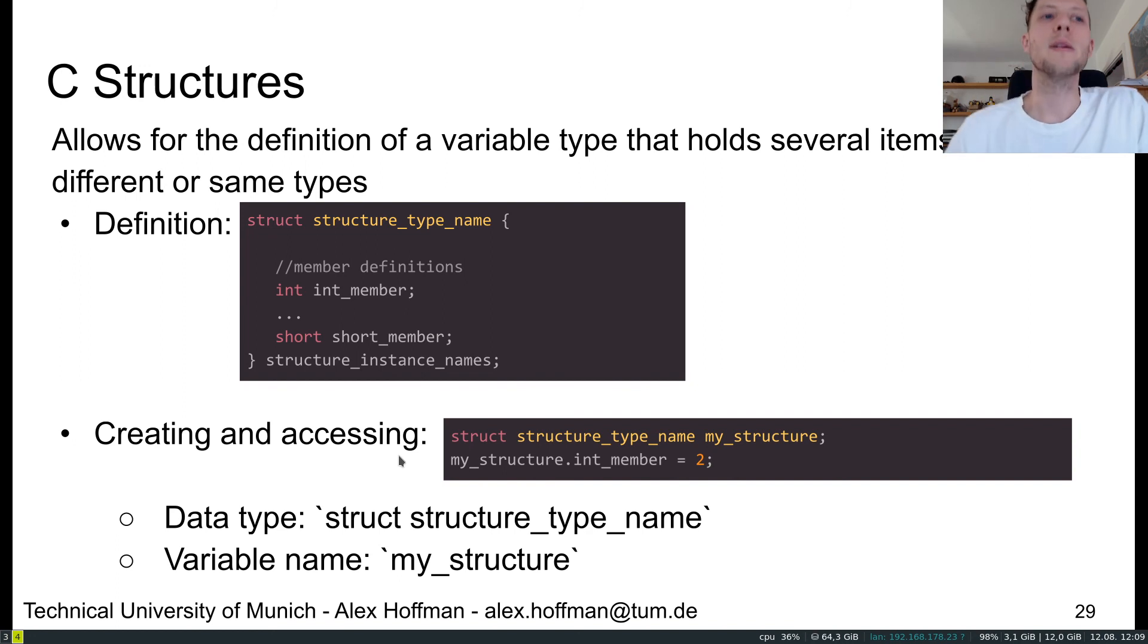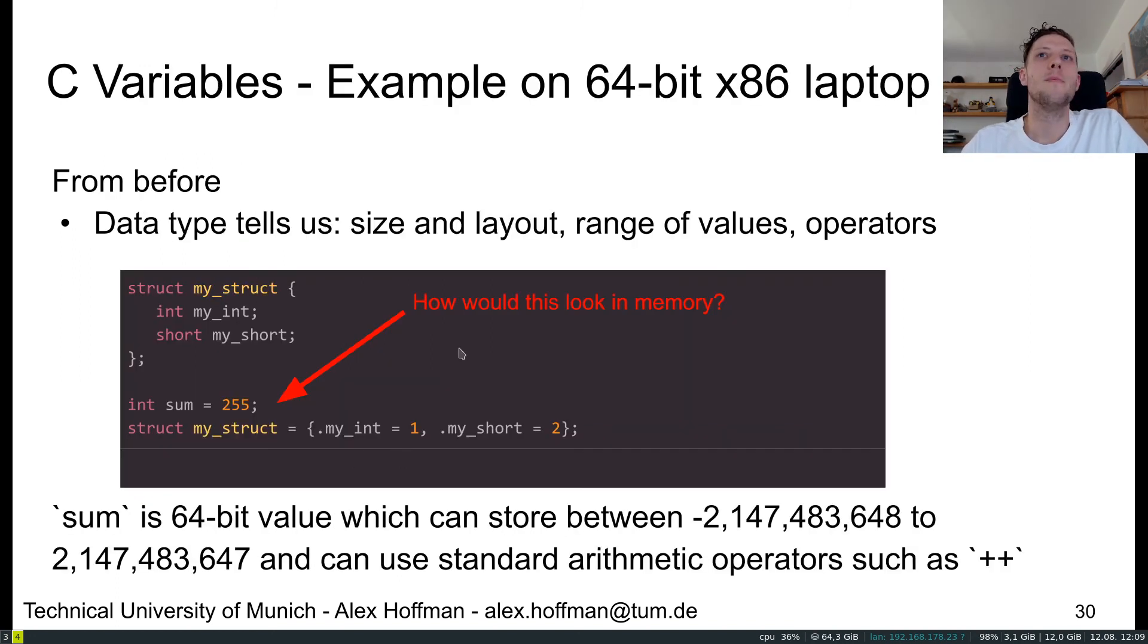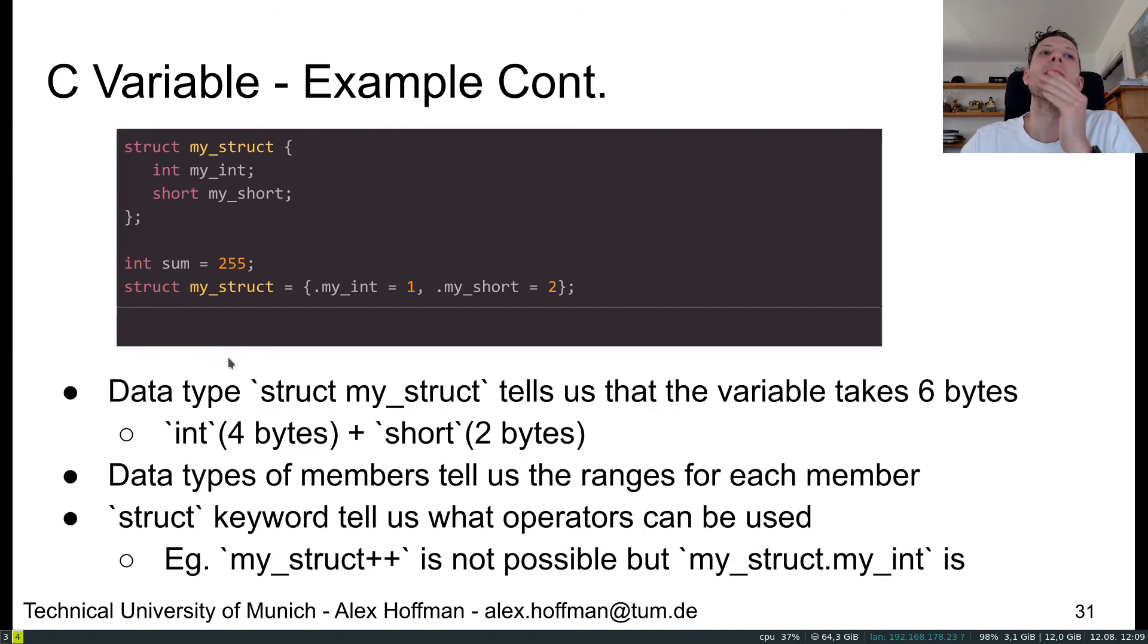I shouldn't have my camera in front of my screen. So how would this look like in memory? As you can probably imagine, we would see for instance a sum, so an integer of four bytes being allocated in memory and then we would have six byte memory chunk being allocated for my_struct. So we have four plus six and this is our structure.